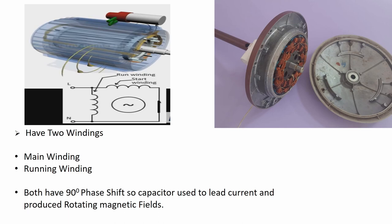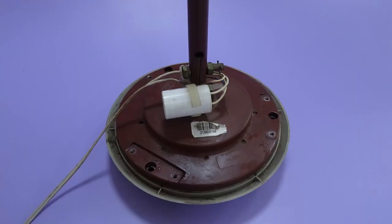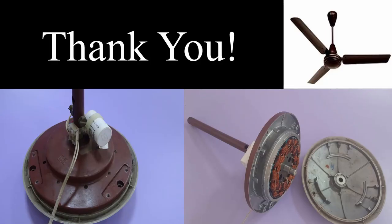When we put a capacitor in running winding series, then the capacitor is leading the current. The voltage is the same but it will be leading the current. The current leading winding is leading the current. So this is the way how the ceiling fan works without any hardcore motor. I hope that this information will feel good. Thank you.